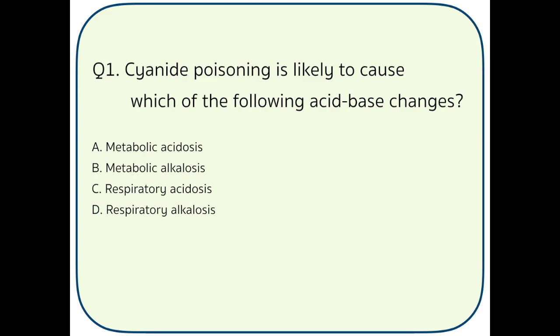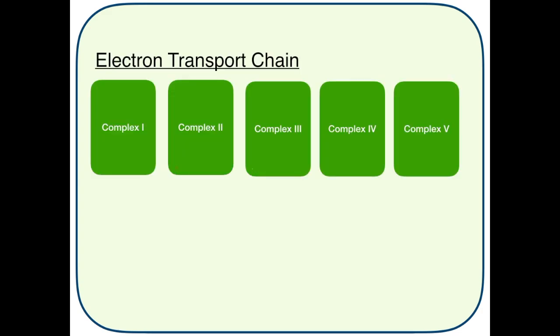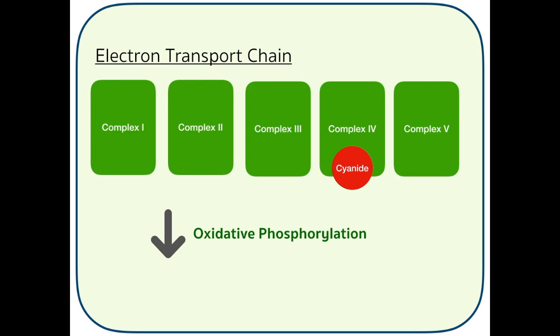Question number 1: Cyanide poisoning is likely to cause which of the following acid-base changes? Option A: Metabolic acidosis. Option B: Metabolic alkalosis. Option C: Respiratory acidosis. Option D: Respiratory alkalosis. The answer is metabolic acidosis. Cyanide inhibits complex 4 of the electron transport chain, which inhibits oxidative phosphorylation. Since aerobic respiration is shut down, a lot of lactic acid will accumulate, leading to metabolic acidosis.